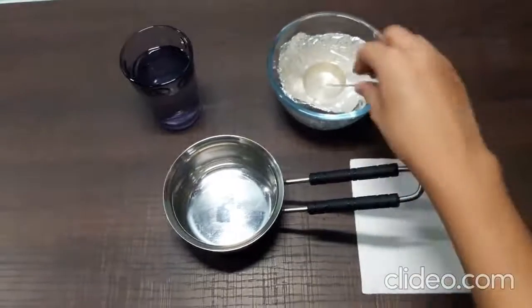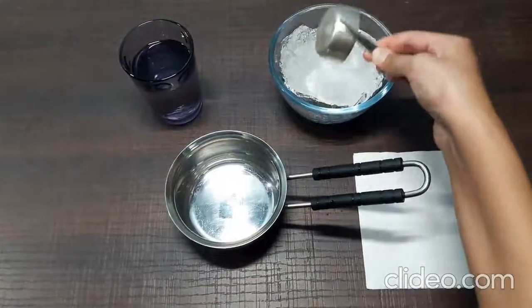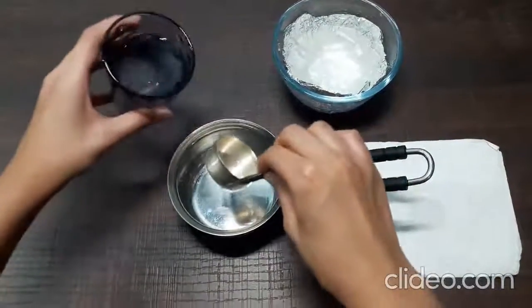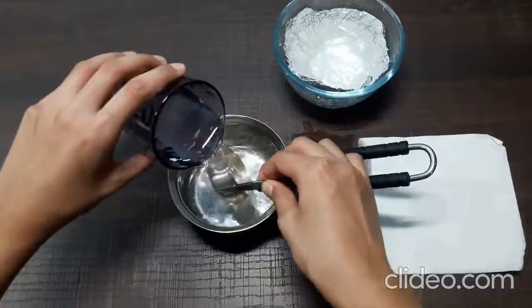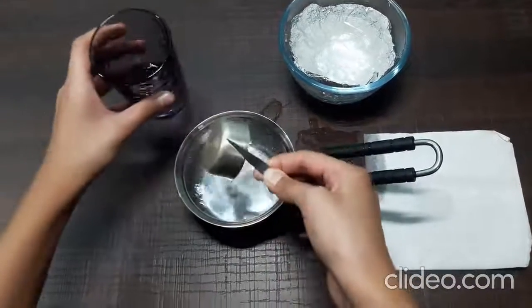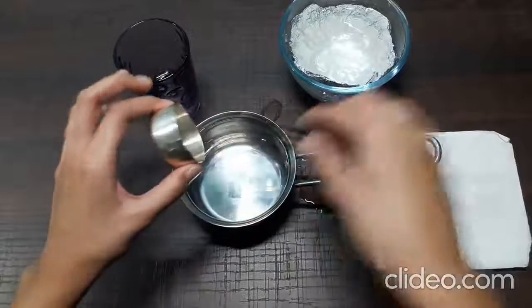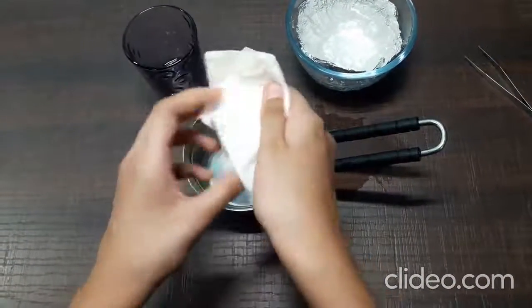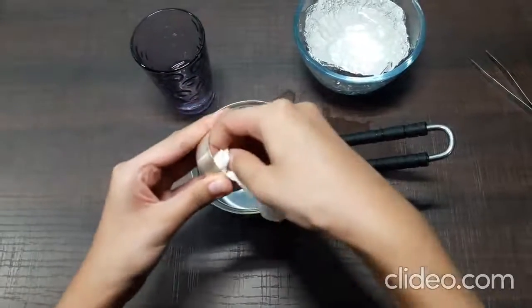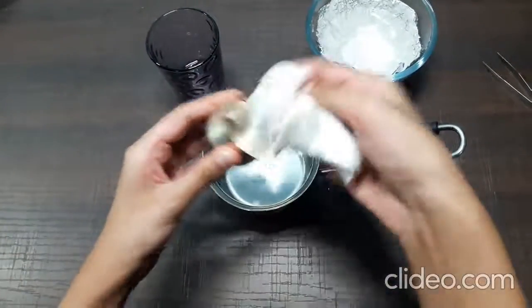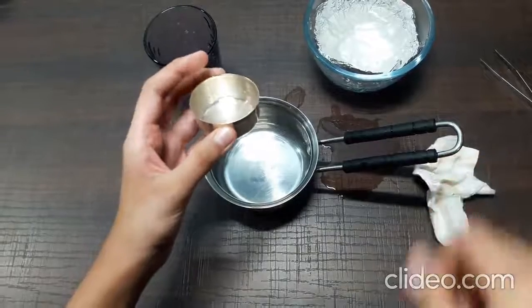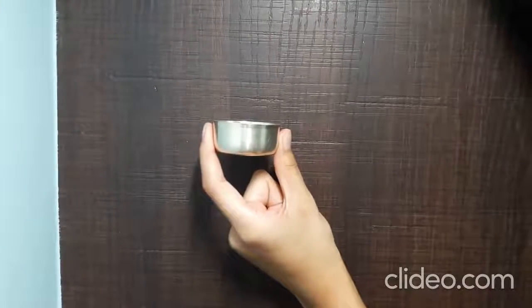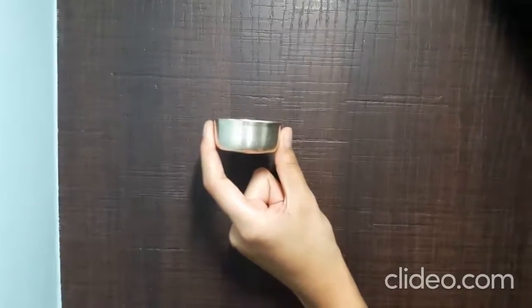After 15 minutes, take the object out of the mixture, rinse it with cold water, and then wipe it using a tissue paper. As you can see, the tarnished silver object has now regained its glow.